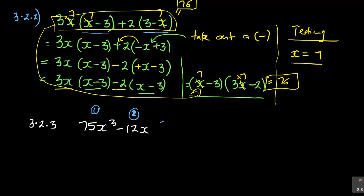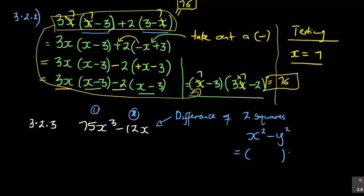There is a high chance there will be a difference of two squares. Always watch out for the difference of two squares. In the difference of two squares, if you're given x² − y², you open two brackets: it becomes (x − y)(x + y). That's what you do. But if you look at this question, there is no difference of two squares visible yet, which means I need to do something first before it can show up.